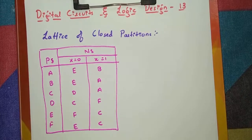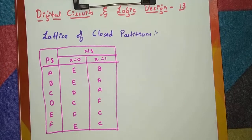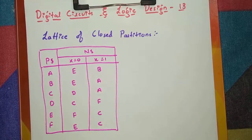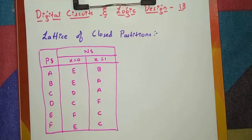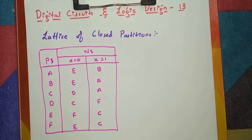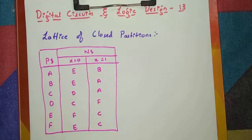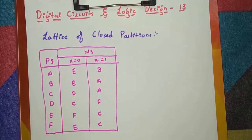Hello everyone, welcome to Engineering Made Easy. This is the 13th video session of discrete circuits and logic design. In this video we will see lattice of closed partitions. Given a state machine table, we have to derive the basic partitions pi_0, pi_1, pi_2, etc., and also draw the pi lattice.